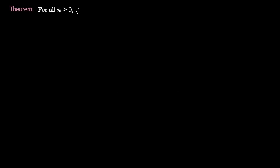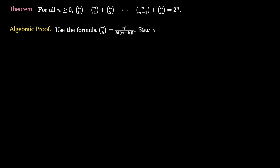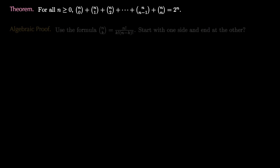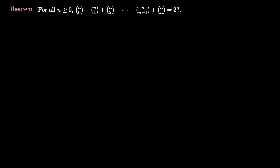Let's see another example using binomial coefficients that doesn't have as straightforward an algebraic proof. The theorem says that for every row n in the subset array, if we add up n choose 0 plus n choose 1 plus n choose 2 all the way up to n choose n, we get 2 to the n. This can be proved algebraically, but it is not obvious how to do it just from the formula for n choose k. So let's prove this combinatorially.